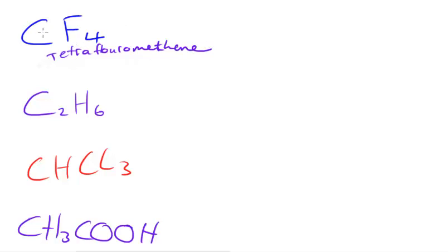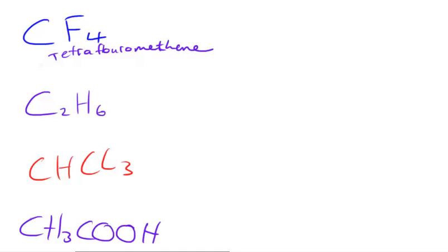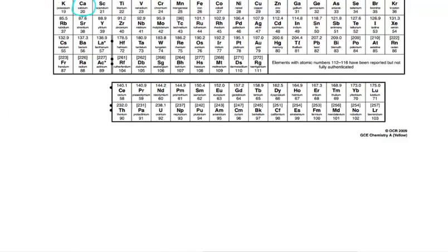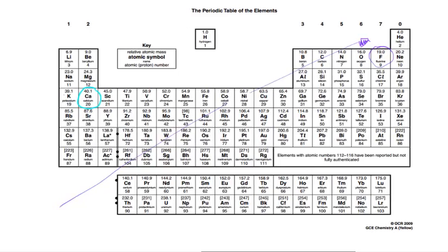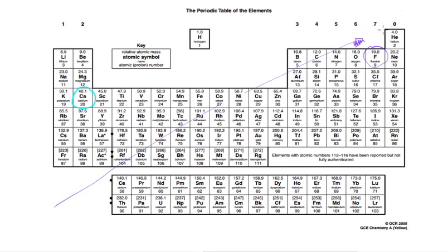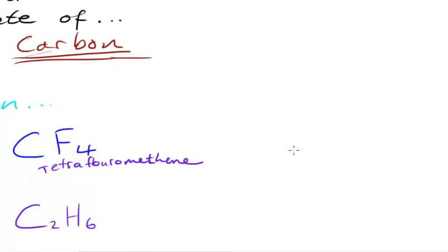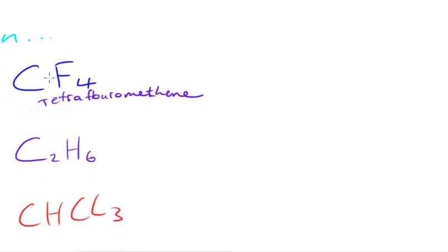To work out the oxidation state of carbon in this molecule, first we take a look at the periodic table. Fluorine is in group 7 and it's near the top right. As I said before, as you go to the top right electronegativity increases, and fluorine is the most electronegative element. So fluorine is going to be very greedy with the electrons — it's going to want to pull the electrons toward itself and get one more electron to fill the outer shell.